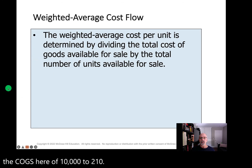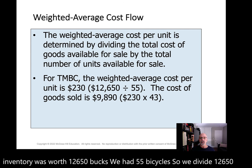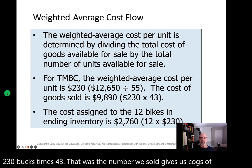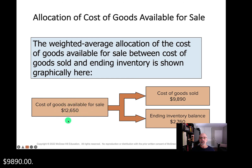For weighted average, first we need to get that weighted average cost. Our inventory was worth $12,650 and we had 55 bicycles, so we divide $12,650 by 55, giving us an average cost of $230. $230 times 43 — the number we sold — gives us COGS of $9,890. Subtracted from the $12,650 total available, that leaves us an ending inventory balance of $2,760.